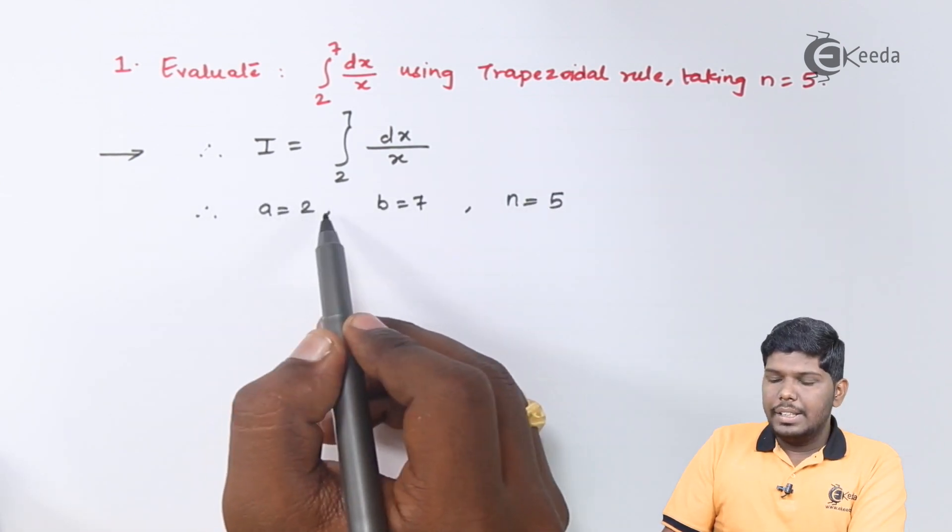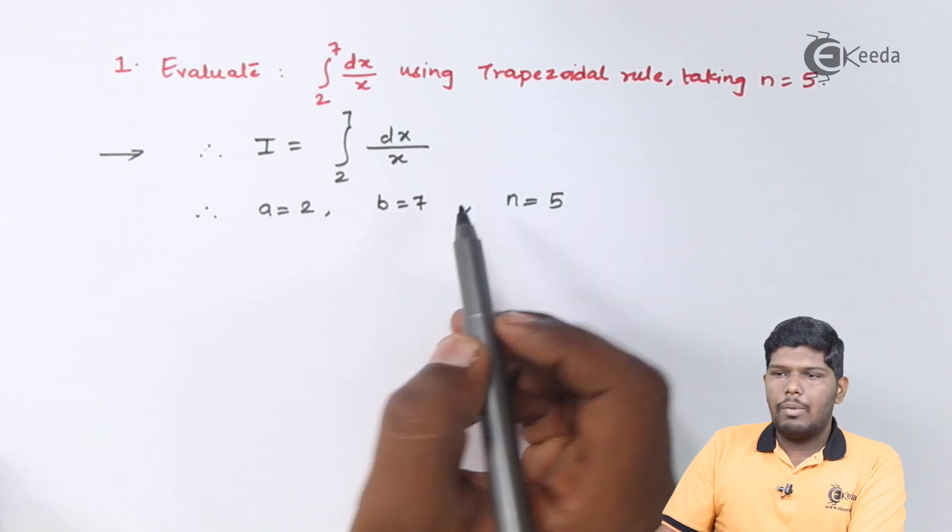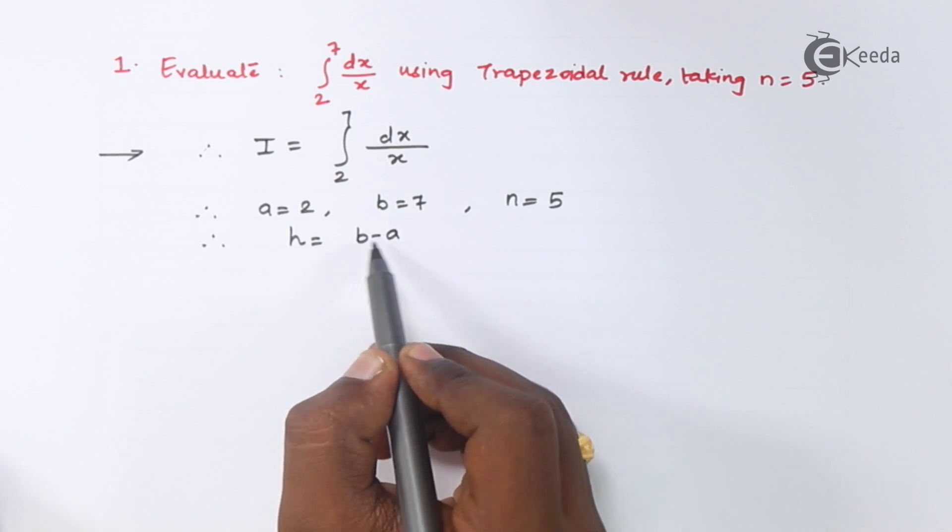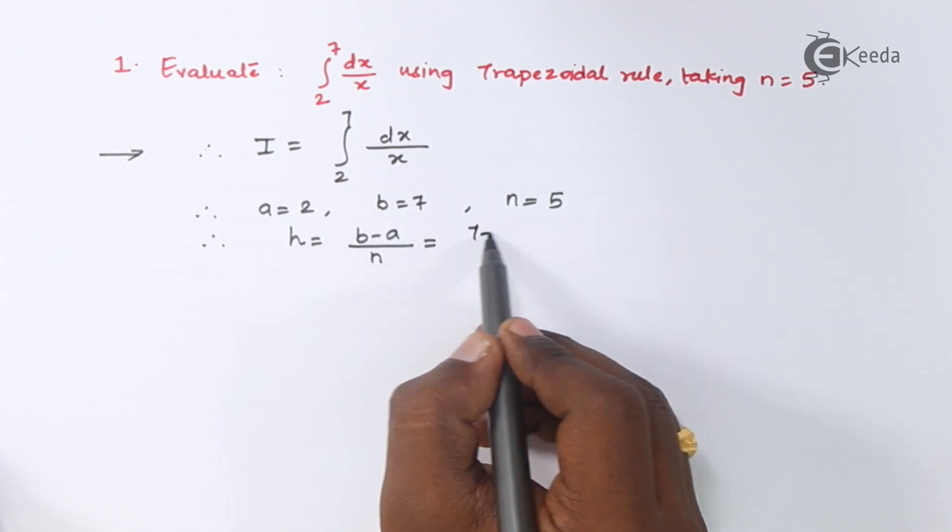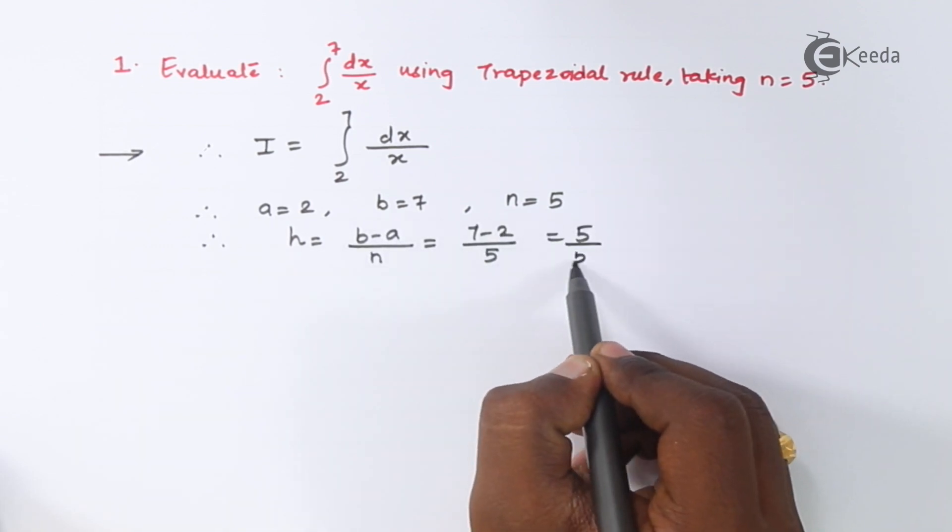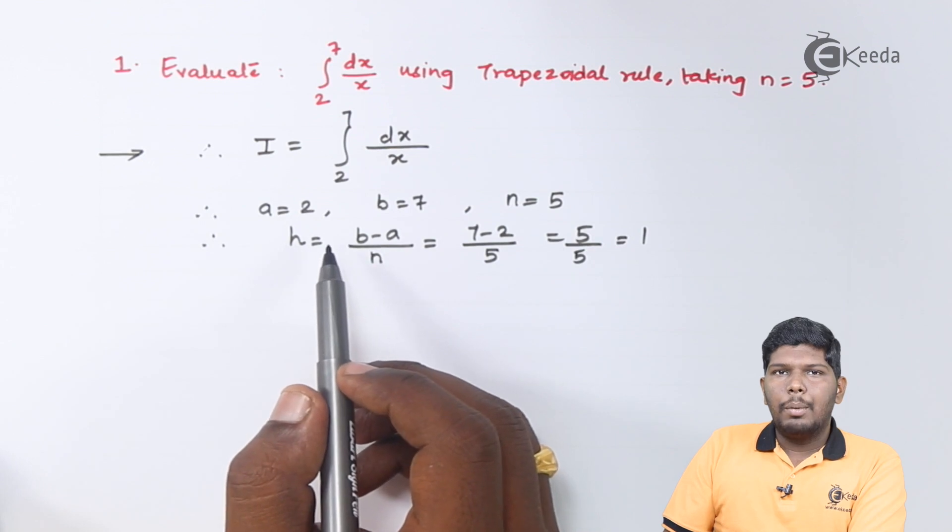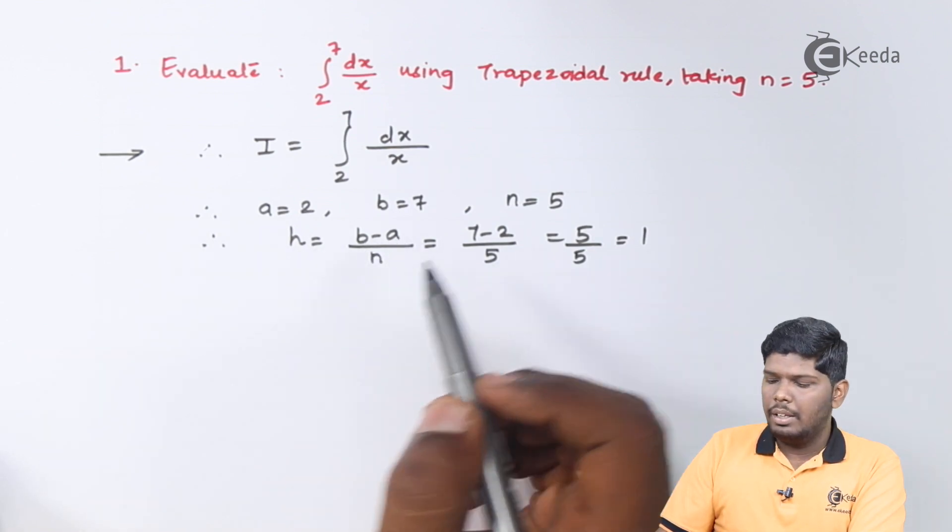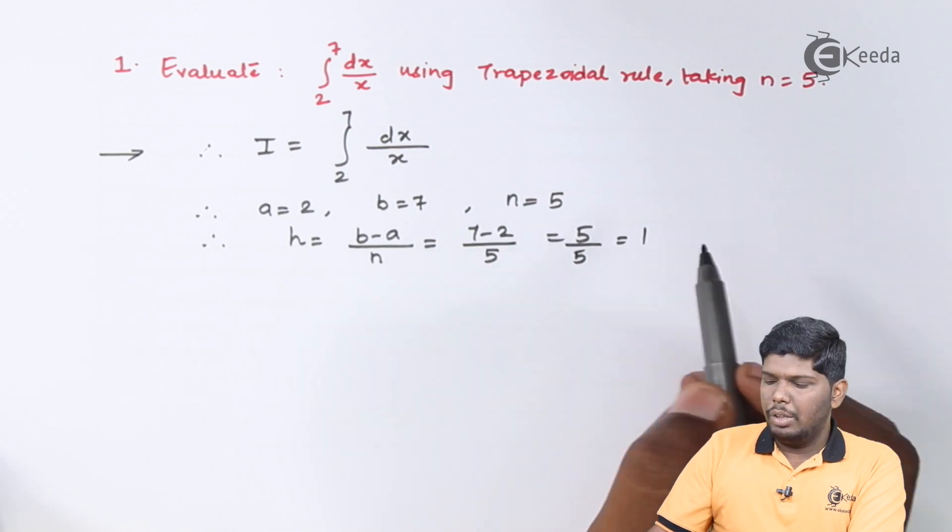The lower limit a equals 2, upper limit b is 7, and n equals 5. Now to find the number of intervals we have the formula h equals b minus a upon n, that is 7 minus 2 upon 5 which will give you 1.